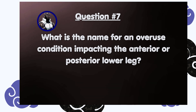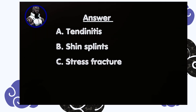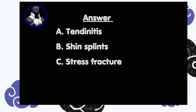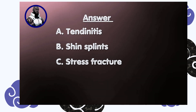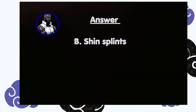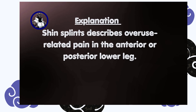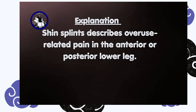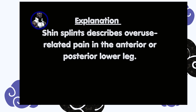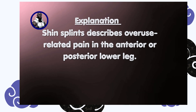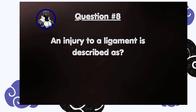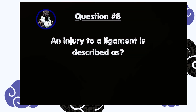Question number seven: what is the name for an overuse condition impacting the anterior or posterior lower leg? A) Tendonitis, B) Shin splints, C) Stress fracture. Answer is B, shin splints. Shin splints describes overuse-related pain in the anterior or posterior lower leg.